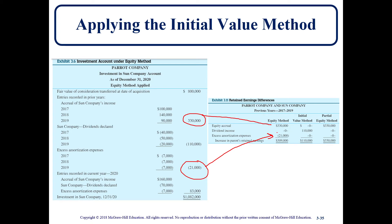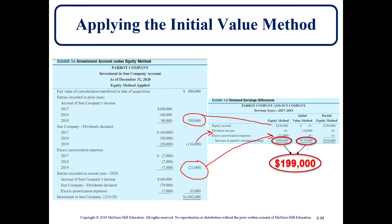Under the Equity Method, the beginning retained earnings for 2020 should be $309,000. However, since the parent has been using the Initial Value Method, all that has been recorded on the income statement year after year is dividend income. So what the parent actually has in beginning retained earnings for 2020 in respect to this investment is $110,000, when it should be $309,000. Therefore, retained earnings is understated by $199,000. Regardless of the method used, consolidated totals will be the same, so we need to adjust retained earnings to bring everything back to the equity method basis.